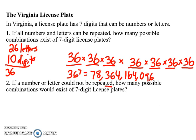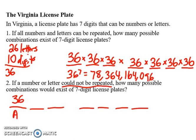How does this change when nothing can be repeated? When I think about each license plate slot, I have 36 options for the very first one. Say I used the letter A for the first slot — can I use A again for the second slot? No, it wouldn't be possible. So I've lost an option and I'm now down to 35 options. Then say I used A and B — I can't use them for the third slot, so now I only have 34 options.